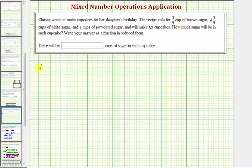The total sugar in cups would be equal to three-fourths of a cup, plus four and three-fourths cups of sugar, plus one cup of sugar.